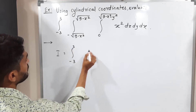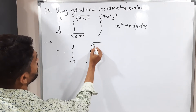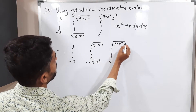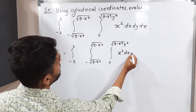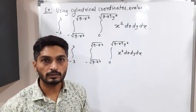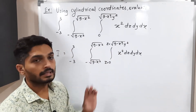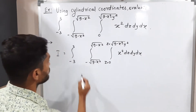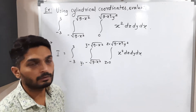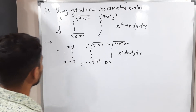So I is equal to the triple integral with outer limits minus 3 to 3. Since this is a triple integration, it has three integrals. The limits go from minus √(9−x²) to √(9−x²) for y, from 0 to √(9−x²−y²) for z, and the integrand is x² dz dy dx.